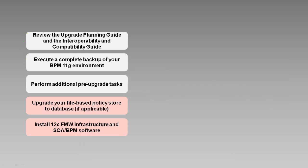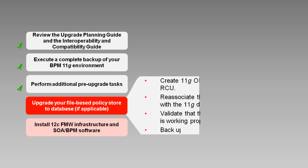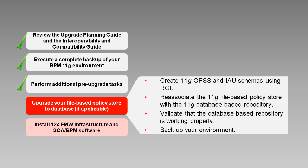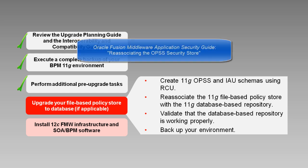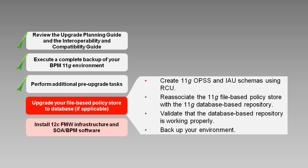The next pre-upgrade task has to do with upgrading file-based policy stores. File-based policy stores can be configured in BPM 11G, although they are not recommended for production environments. BPM 12C does not allow file-based policy stores at all, so if and only if your 11G environment uses one, you need to create a database-based repository and re-associate your policy store with this new repository. After validating that the repository is working correctly, you'll need to back up your environment one more time. You can get details on re-associating your file-based policy store in the section titled Re-associating the OPSS Security Store in the Oracle Fusion Middleware Application Security Guide for the 11G release. Of course, if your 11G installation already uses an LDAP or database-based repository, then you can skip these steps.